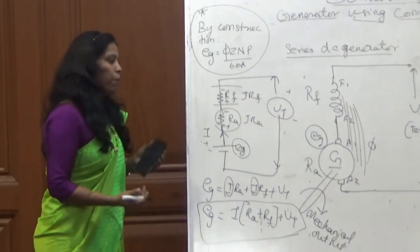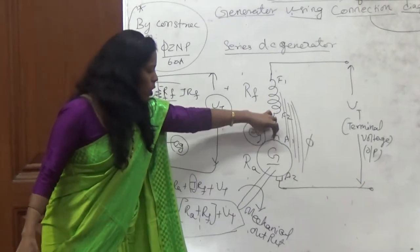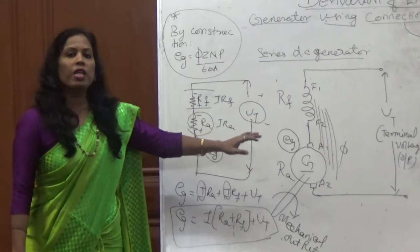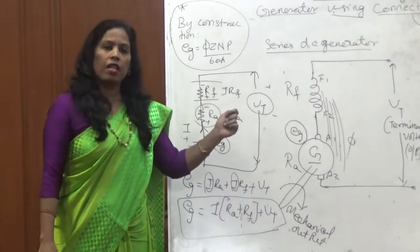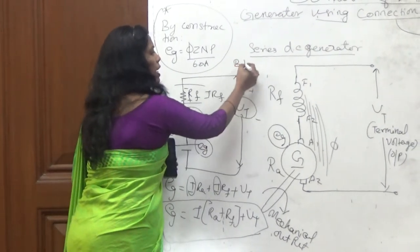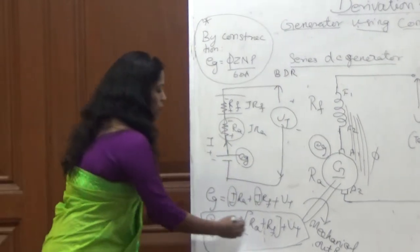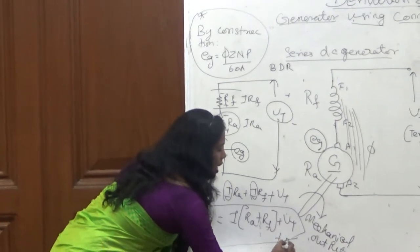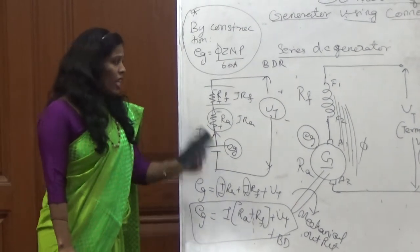If you want to consider the brush drop—whenever we draw EG finding, we draw a smooth square box. What is that? It is a brush. Brush means, either it is a generator or it is a motor, we give supply or we take the supply through the brushes. So sometimes they always write brush drop, BD drop. That brush drop also can be added at the end if it is given in the question.